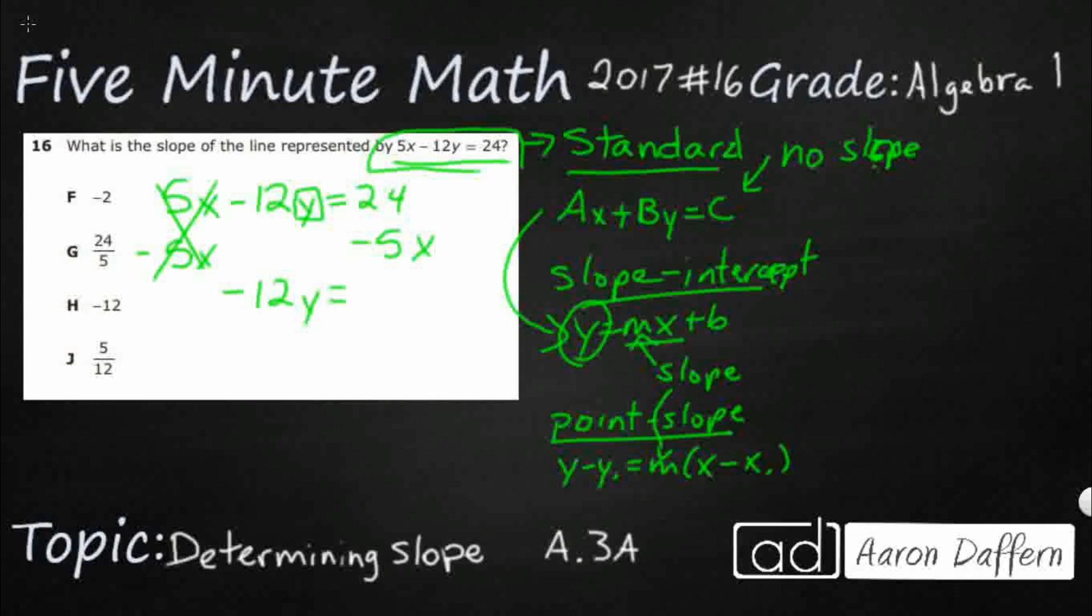This is going to leave me a 24 minus 5X. But I want to put my X first, because that's kind of what happens. So I'm going to end up doing minus 5X plus 24. So we're close to the slope here, but you notice that I've still got this negative 12, right? It's negative 12 times Y.